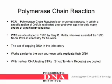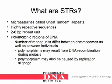With nuclear DNA testing, STRs, or short tandem repeats, are what are copied. STRs are microsatellites that are called short tandem repeats. They have highly repetitive sequences, and each repeat unit is about two to six base pairs. They are polymorphic regions of DNA. The number of repeat units differ between chromosomes as well as between individuals.